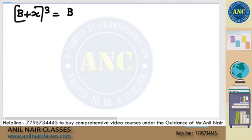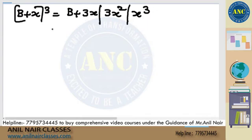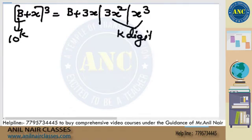B plus x whole cube is B plus 3x. Next is 3x square. And next is x cube. If B is of the form 10 power k, last two places k digits. This is the concept. Let us do problems.